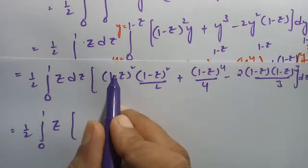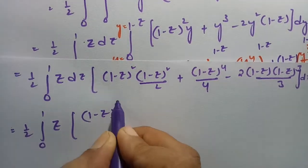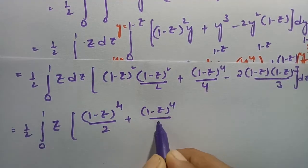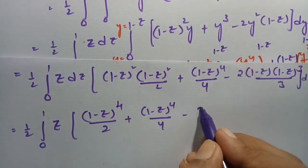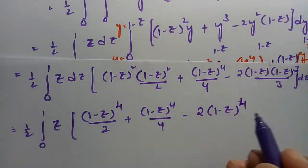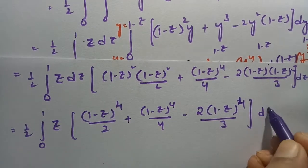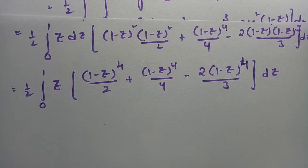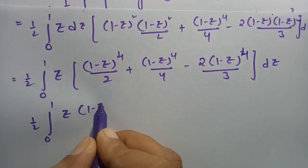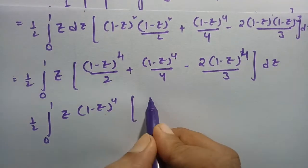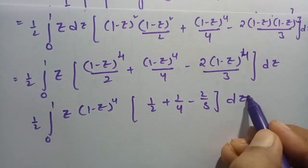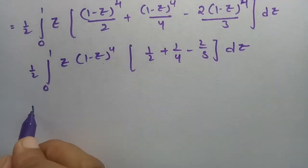Continuing: (1 minus z) to the power 4 by 2 plus (1 minus z) to the power 4 by 4 minus (1 minus z) to the power 4 by 3, times dz. Taking LCM, this is one-half times integral 0 to 1 of z(1 minus z) to the power 4 times (1/2 + 1/4 minus 2/3), dz.